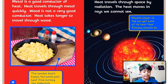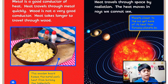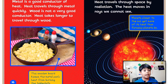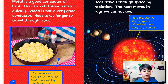As you can see, this wooden board keeps the metal pan's heat from burning the tablecloth. Heat travels through space by radiation — the heat moves in rays we cannot see. Planets closer to the sun get more of its heat than faraway planets do.